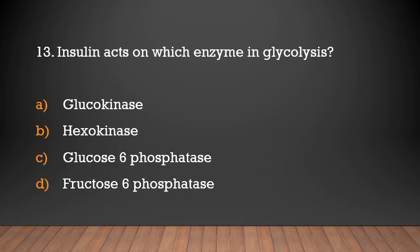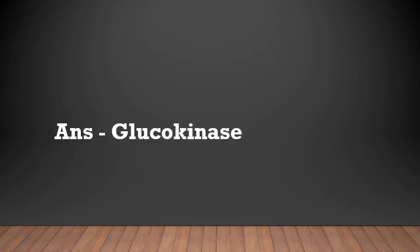Insulin acts on which enzyme in glycolysis? Glucokinase, hexokinase, glucose 6-phosphatase, or fructose 6-phosphatase? Answer: Glucokinase. Insulin acts on glucokinase.